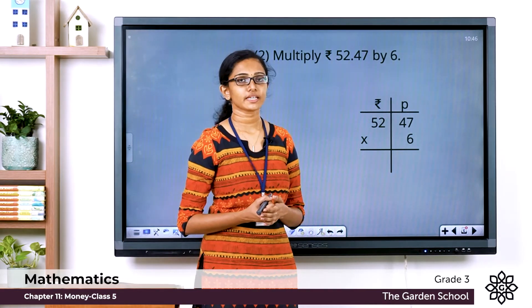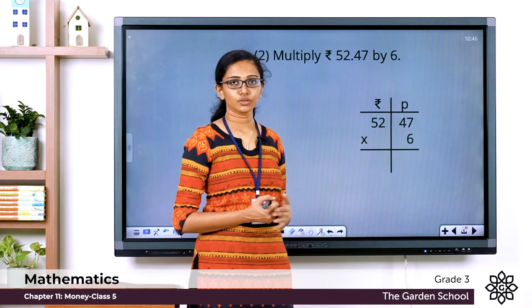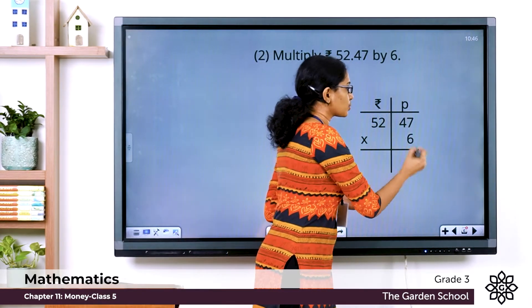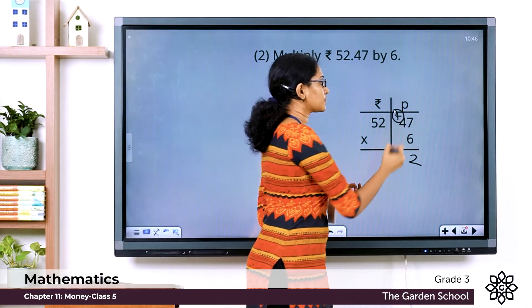In the paisae column we have 6 into 7 which is equal to 42. Let's write 2 here, carry over 4 to the next column.